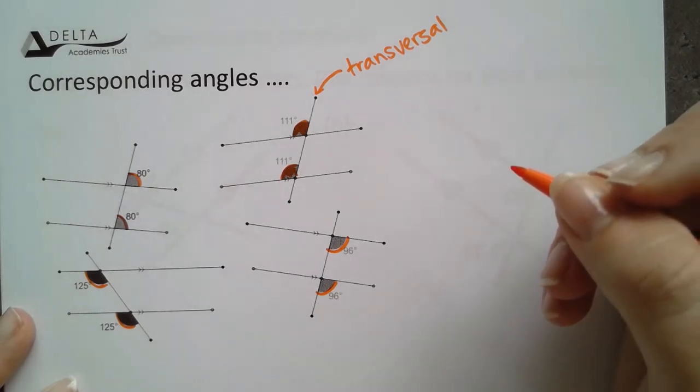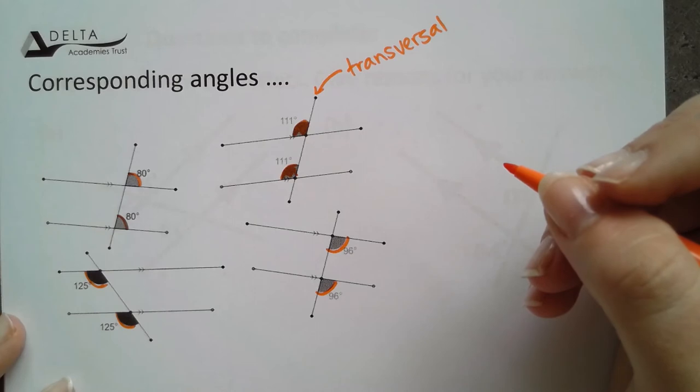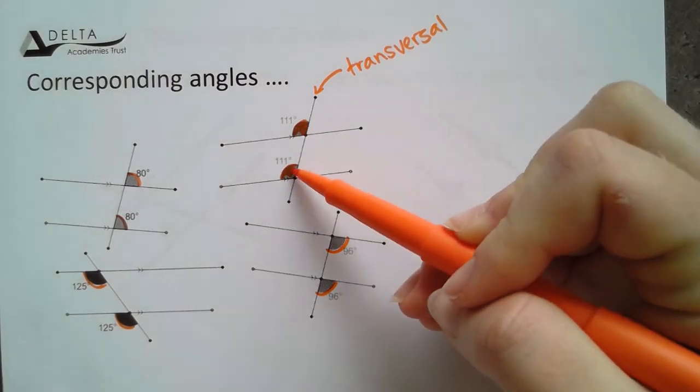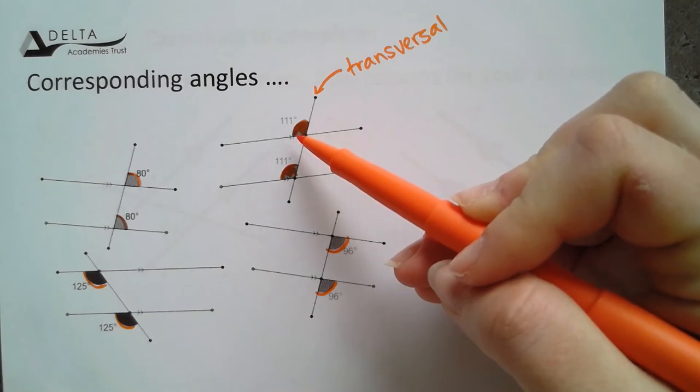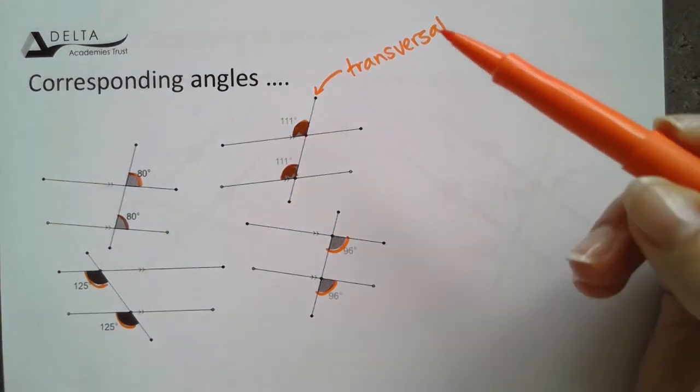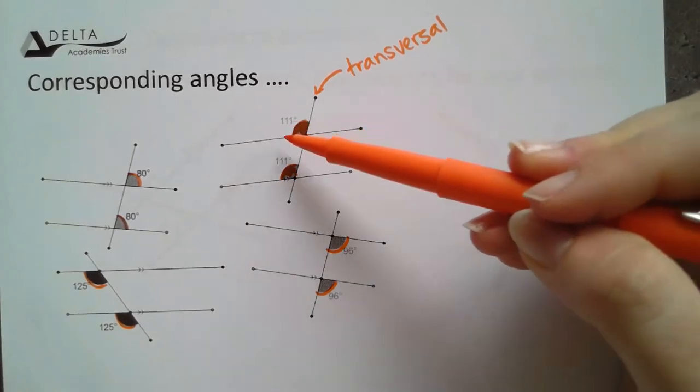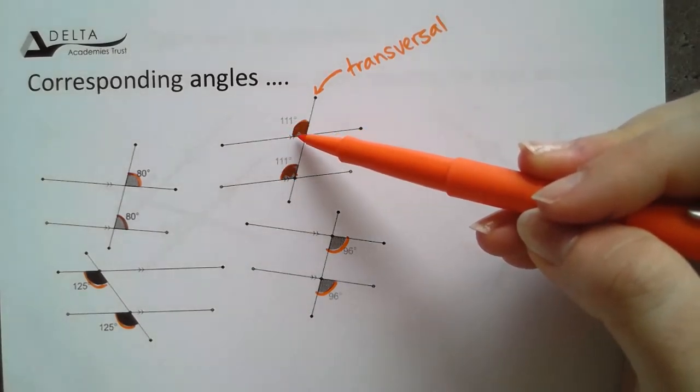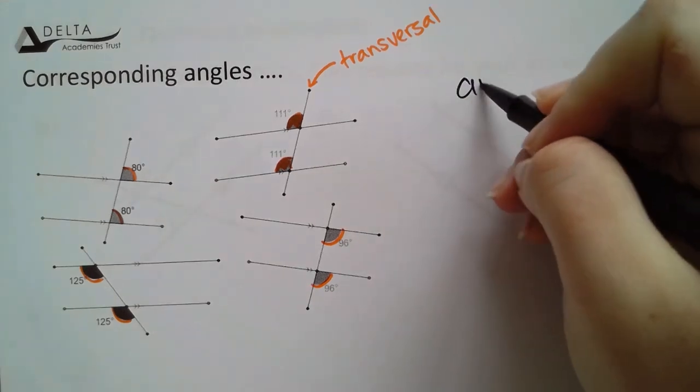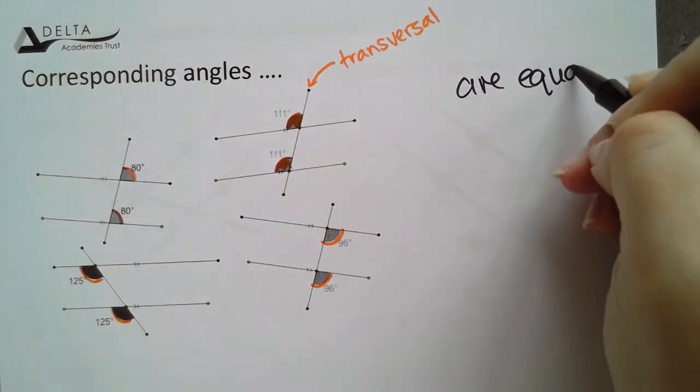So they're on the same relative position. That is absolutely different to alternate because we're actually looking at them being in the same place rather than in the opposite place on the transversal. As you can see from the diagram, corresponding angles are equal in parallel lines.